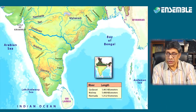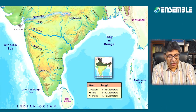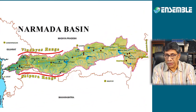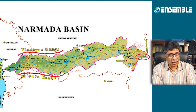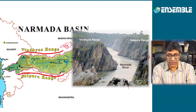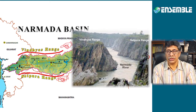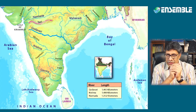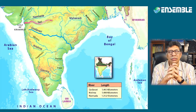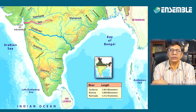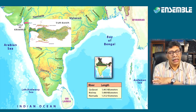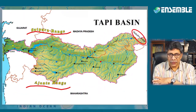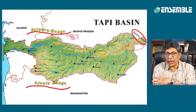The Narmada is the largest peninsular river flowing in a westward direction. It rises from the Amarkandak peak of the Maikal range and flows through the rift valley between the Vindhya and the Satpura ranges towards the west, draining into the Gulf of Kambhat. The Tapti is a much smaller river in comparison to the Narmada. It rises from the Mahadeva range and flows in a rift valley lying between the Satpura and the Ajanta ranges towards the west.